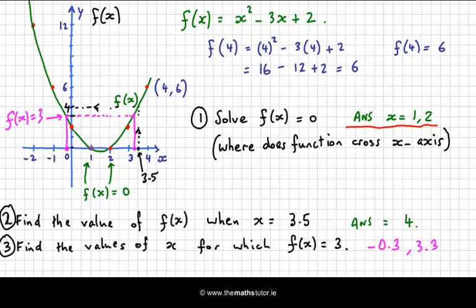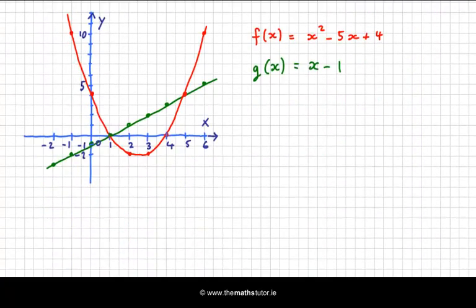Let's look at another example. Here I have the graph of two functions. In red, I have a quadratic function. And in green, I have a linear function.